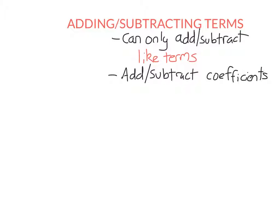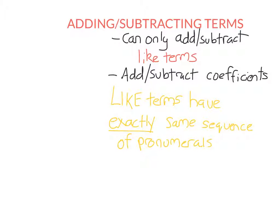That probably doesn't make a lot of sense, so let's go through what like terms are. A term is just a sequence of letters or pronumerals and numbers. Two terms are said to be like terms if they have the same sequence of pronumerals or letters. So if I wanted to look at 7a and 2a, they are like terms because they both have 1a.